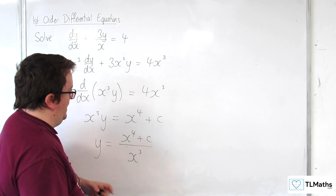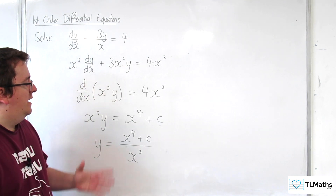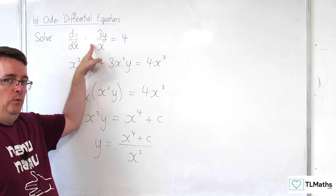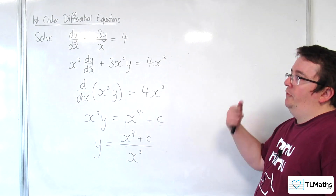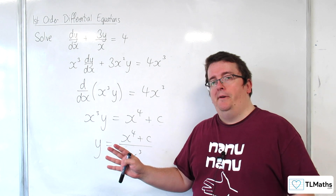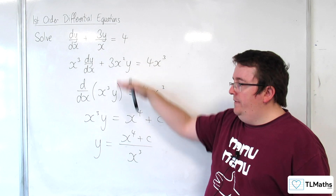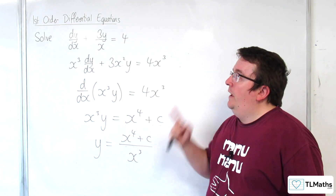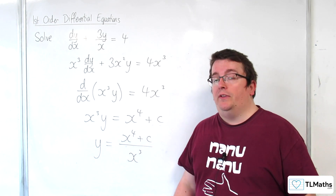Then you can divide through by x cubed to get y is equal to x plus c over x cubed. That's the general solution to the differential equation we started with. So what we can see is that if we can find this function of x to multiply through by, we can get it into perfect derivative form and then solve the differential equation. The trick now is how do we find what to multiply through by? That's what we're going to introduce in the next video.